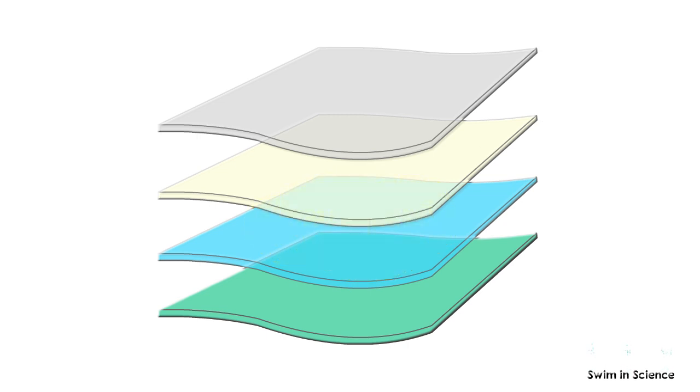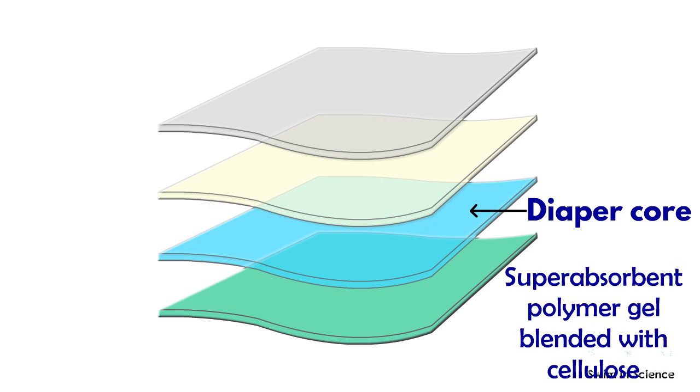The third layer is the diaper core or absorbent layer which consists of superabsorbent polymer gel that may be blended with cellulose. Urine is locked and stored within this polymeric structure even under pressure.